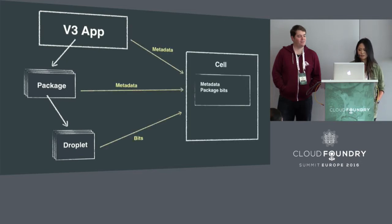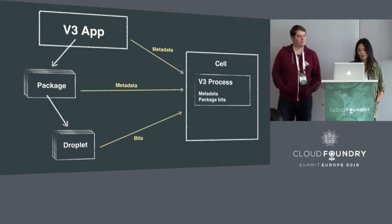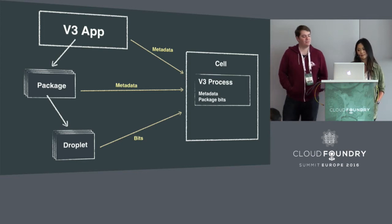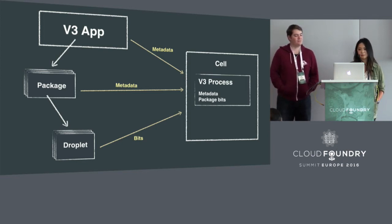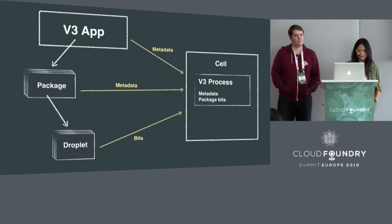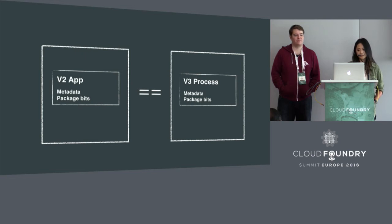And then when the user is ready to execute their code, this desired combination of metadata and compiled bits can be downloaded and run. This is now what we call a v3 process. And by splitting this monolith into more manageable and independent concepts, we can provide an API that supports a more flexible and nuanced management of your apps. V2 apps that were previously pushed with v2 are now available as v3 processes as well.